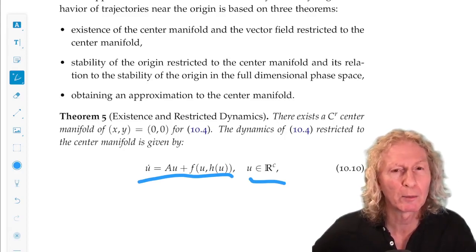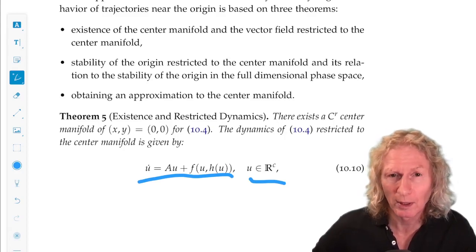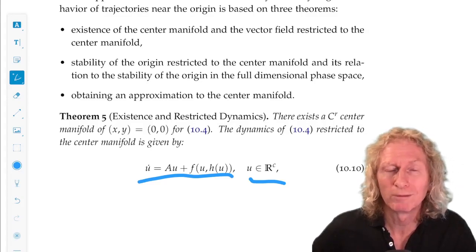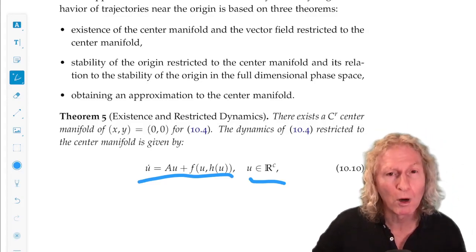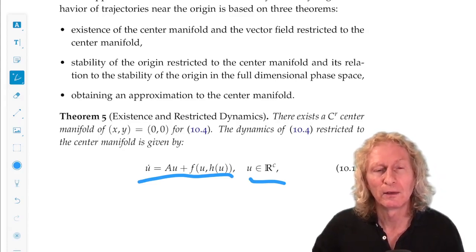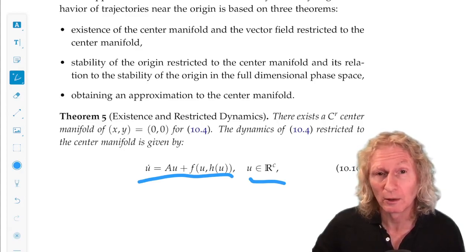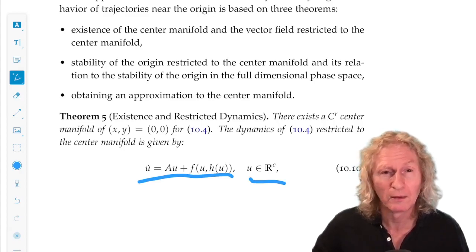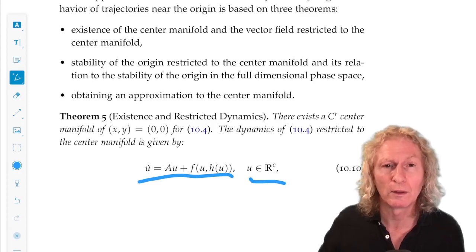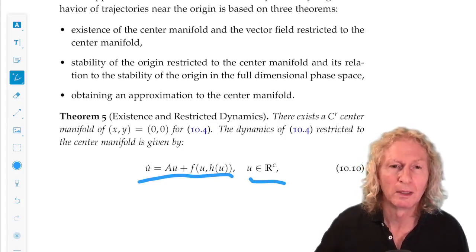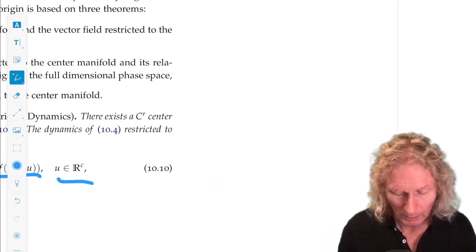And I've swapped out the variable X, which describes the center subspace, for a new variable U. I mean, it's just a variable, but I wanted to emphasize the fact that the center manifold is non-linear, it's not a subspace, and the vector field is a vector field on this surface, not on the subspace, a hyperplane.